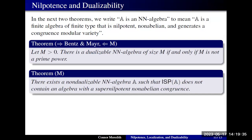I should say a few words about how we actually obtained these things. For coming up with a dualizable algebra of non-prime-power size, our method was to take a composite number M, take two distinct primes dividing M — P and Q — and expand the group Z_P cross Z_Q by a single n-ary operation. Our extra operation is designed to force our expansion to be two-step nilpotent, yet also be rich enough that we get a very rich term structure.